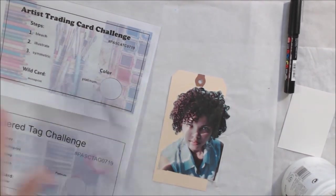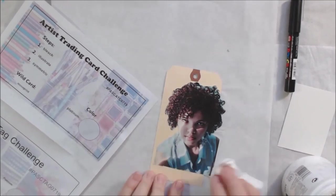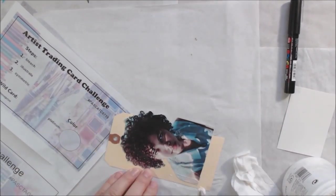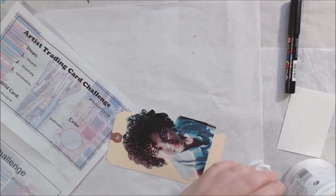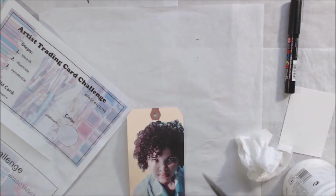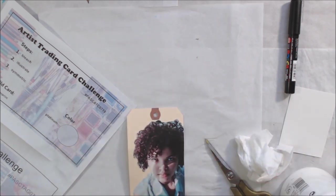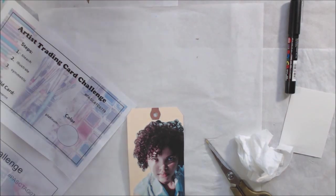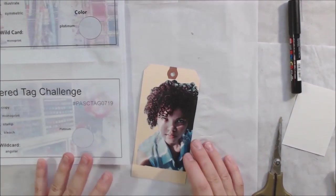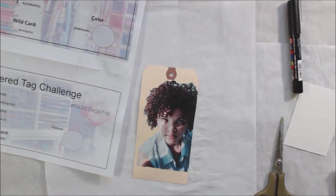I'm starting with the altered tag challenge. This is a regular manila shipping tag and the first prompt was copy. I had this photocopy of an image of a girl from unsplash.com, which is a site where you can get photos for inspiration and use without copyright.